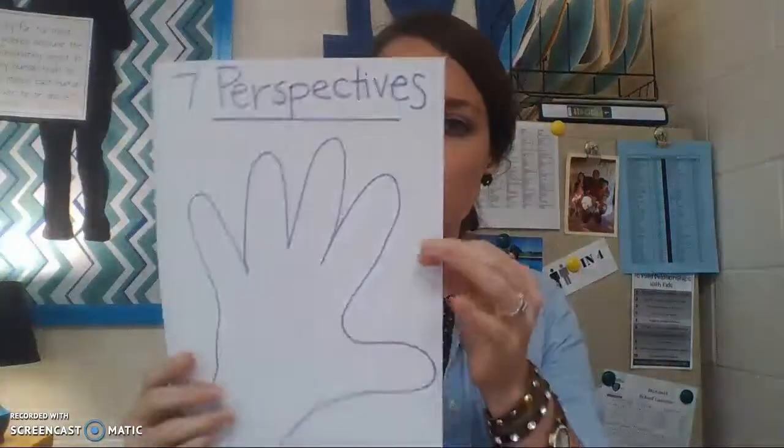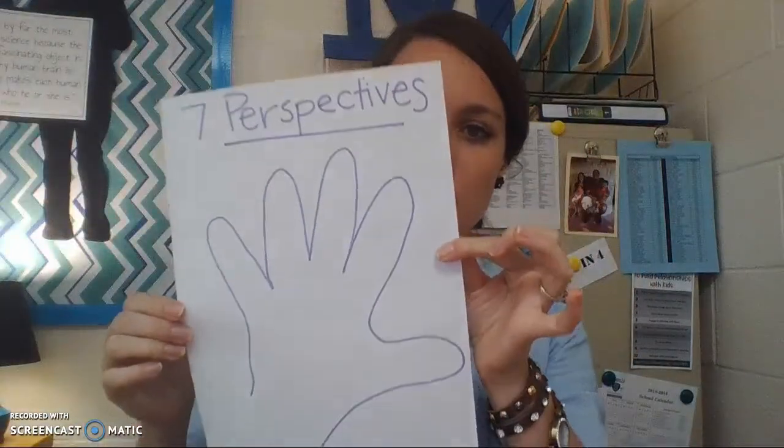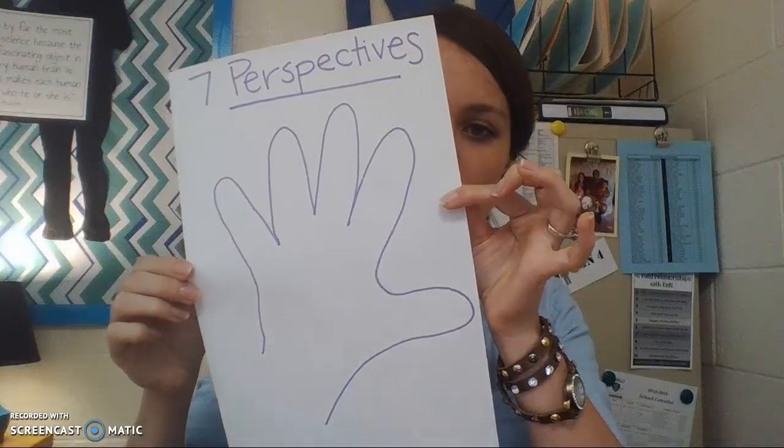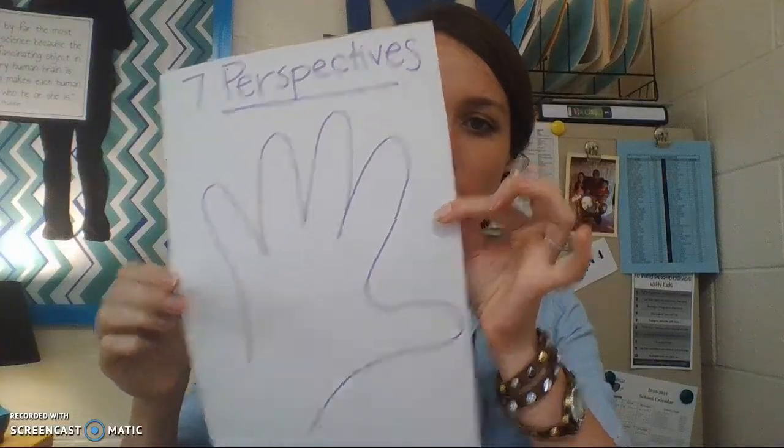This is what I want it to look like, something kind of like this, and then just have seven perspectives. As I'm talking through the perspectives, I want you to write on this hand and I'll tell you how to do it as we go.